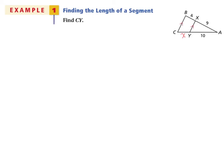Using the triangle proportionality theorem, we could say the ratio of 9 over 4 equals the ratio 10 over X.